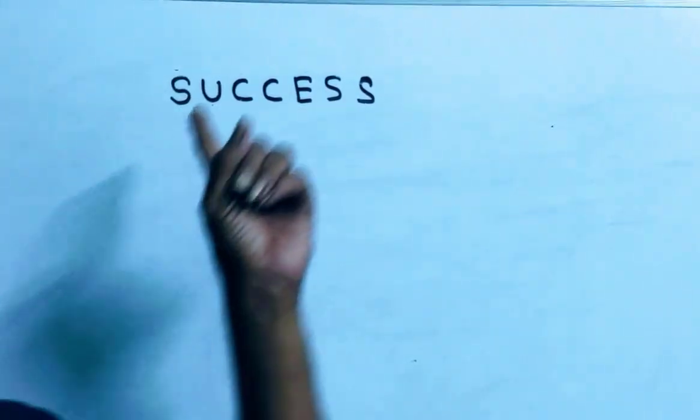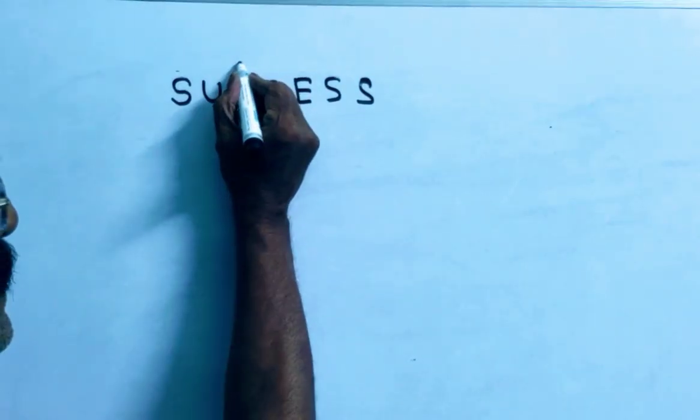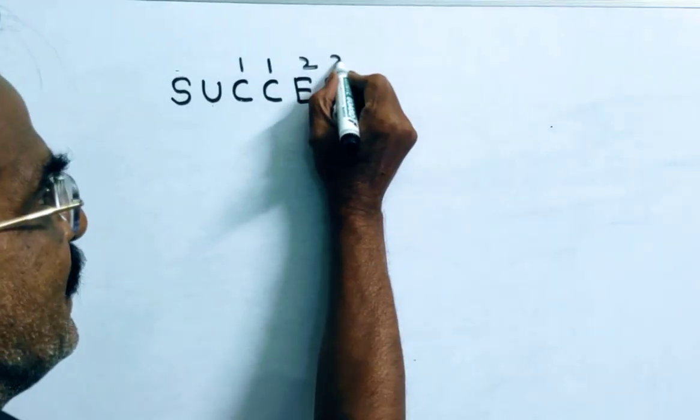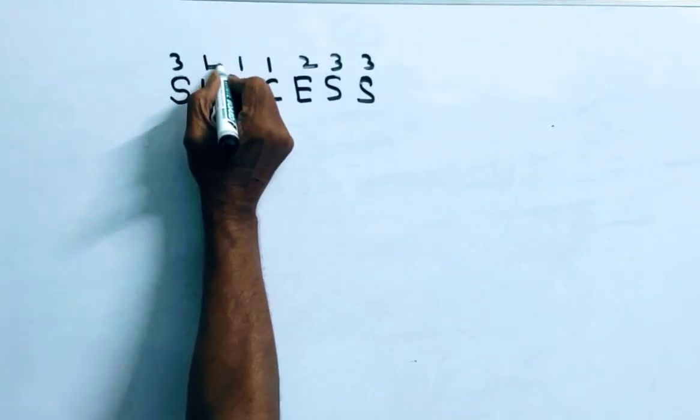Friends, first let us assign the values to letters of the word success in alphabetical order. So, accordingly C is 1, E next one, so E is 2 and S is 3, and U is 4.